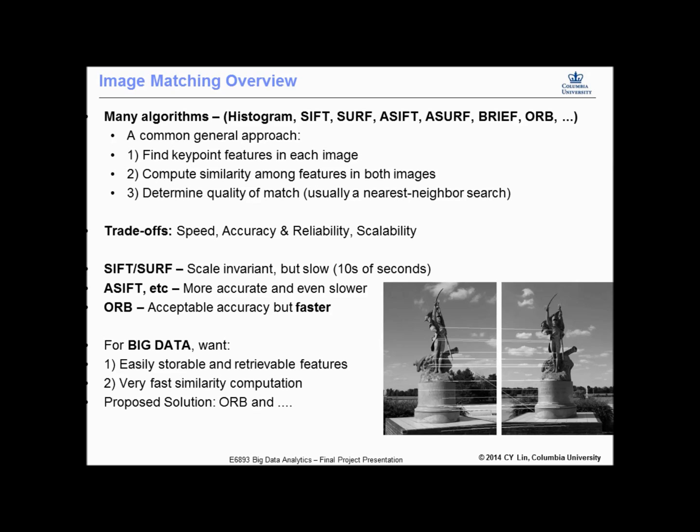The conventional approach to image matching consists of three basic steps. First, we pick a feature extraction algorithm, for example SIFT, and use it to identify key points in our images. These key points are then transformed into descriptors, which generally are high dimensional vectors, which could be as high dimension as 64 or 128.